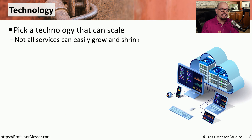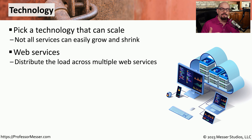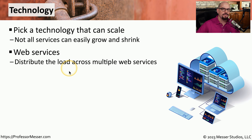We also have to pick a technology that can easily scale based on the supply and the demand. Not all technologies have the ability to grow and shrink as these different demands are presented, so it's important that we think about that in the very early stages of engineering this design. For example, if we're implementing a new series of web servers, we may want to have an implementation that includes load balancers and multiple servers. That way, if we have a large demand, we can increase the number of servers behind the scenes, and if the demand decreases, we can easily remove servers from that particular load balancer to have exactly the number we need for the demand.